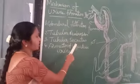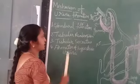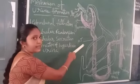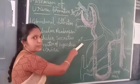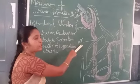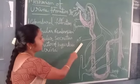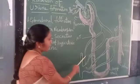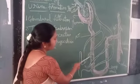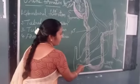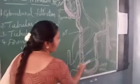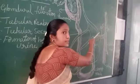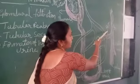Next one, tubular secretion. Here reabsorption completed in PCT. PCT mean proximal convoluted tube. PCT to loop of Henle, through the loop of Henle into DCT. DCT means distal convoluted tube.